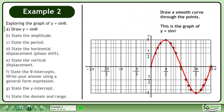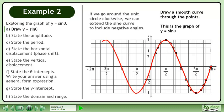Draw a smooth curve through the points. This is the graph of y equals sine theta. If we go around the unit circle clockwise, we can extend the sine curve to include negative angles.